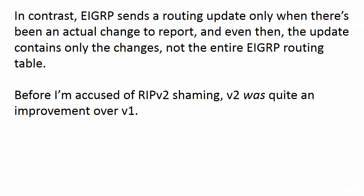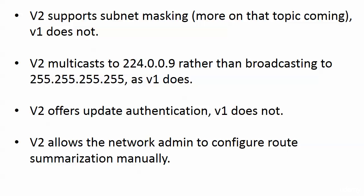EIGRP sends a routing update only when there's been an actual change to report, and even then the update contains only the changes, not the entire routing table. That's a pretty good enhancement — you can see where that 'E' is coming from. OSPF handles things differently, but it's also much more efficient than distance vector protocols.